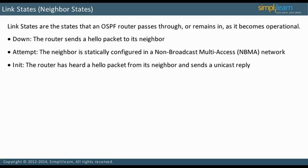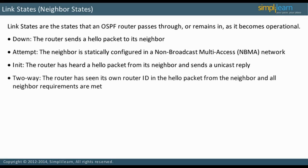In the INIT state, a router has heard a hello packet from its neighbor and sends a unicast reply. The interface remains in this state if hello time does not match. The two-way state occurs when a router has seen its own router ID in the hello packet from the neighbor and all neighbor requirements are met. The neighbor is added to the neighbor table and bi-directional communication is established between the routers.